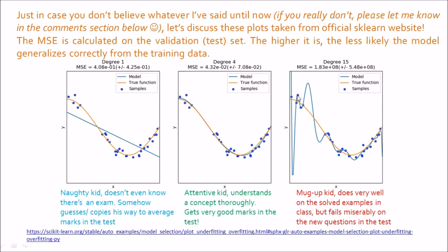The sample training data points are like the solved examples in class. The mug-up kid mugged up all the answers for those points but didn't know how to approach the problem, so when it came to the exam, he failed miserably. This illustrates underfitting, overfitting, and good fit.